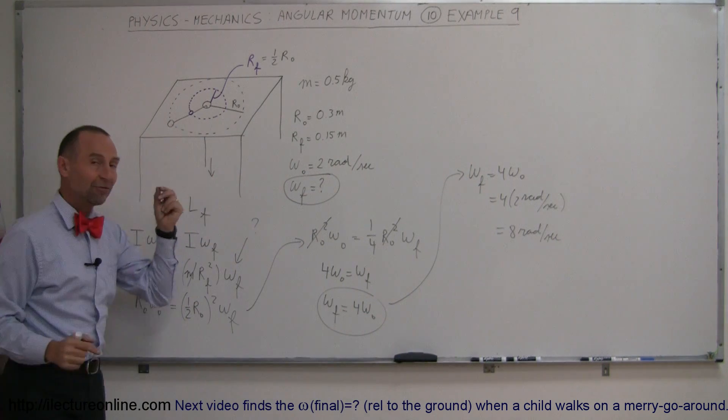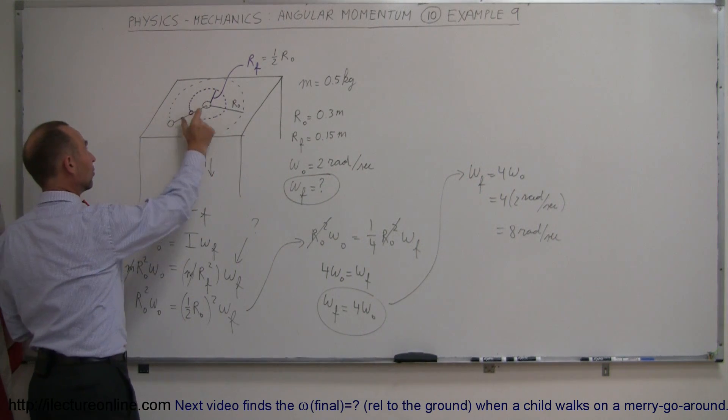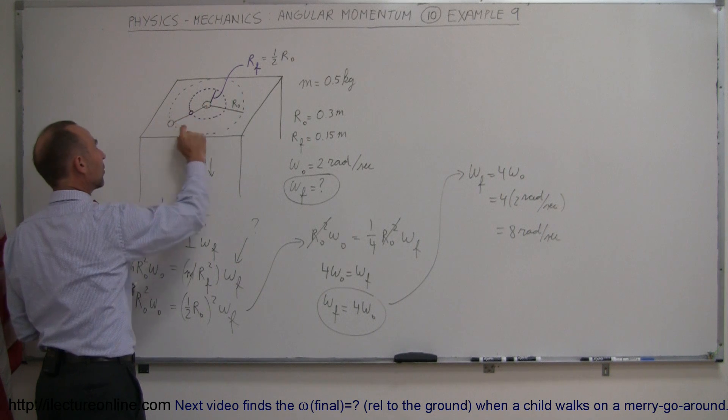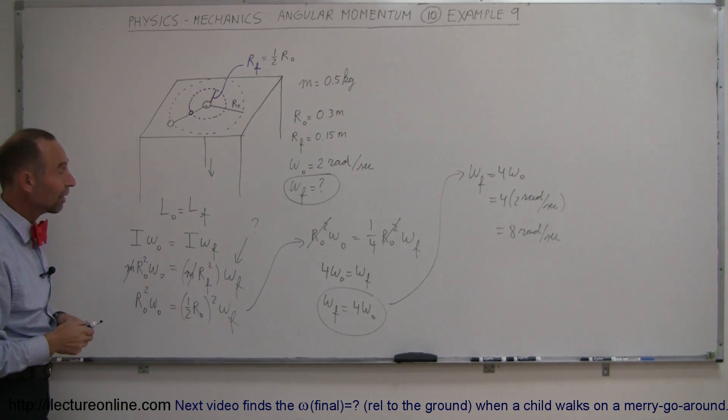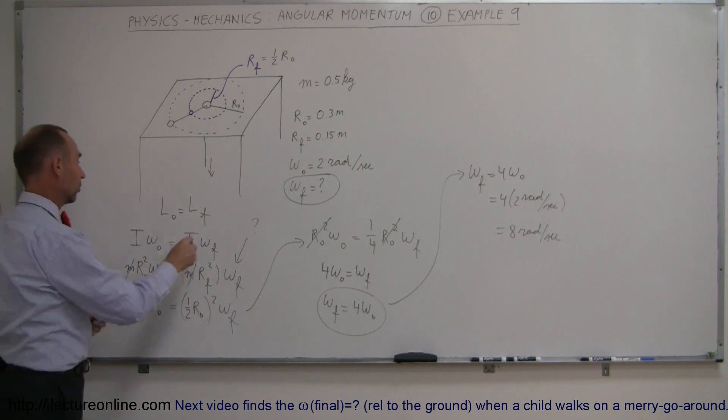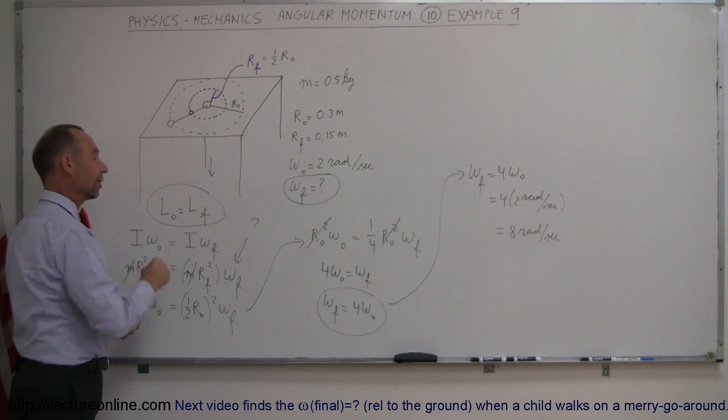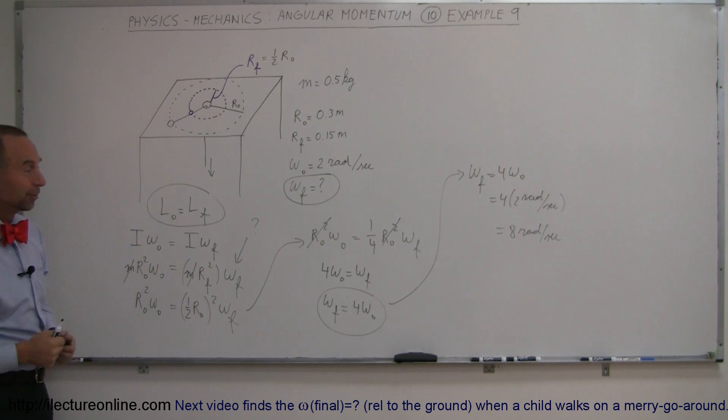So by making the radius half of what it was before by pulling the string in, the angular velocity will be four times as much, kind of surprising but how do you know that for sure? Because we know that angular momentum is conserved and that's how you do that problem.